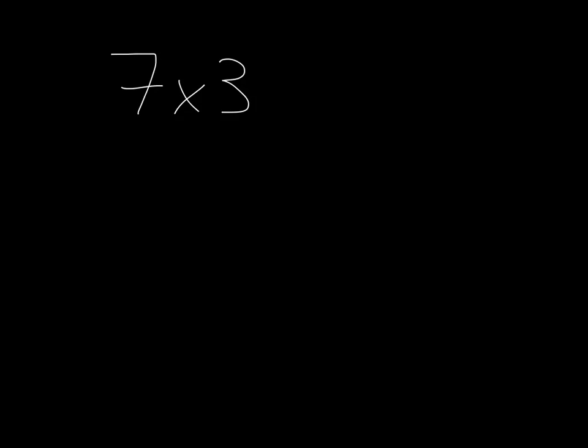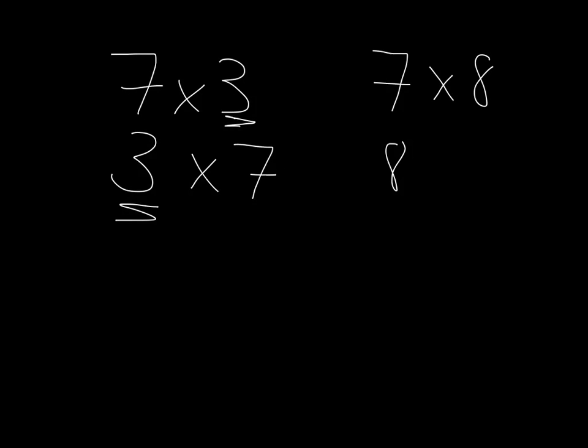Because if we need to do 7 times 3, which is the same as 3 times 7, we can just rely on the 3 times table, which we know really well. And if we want to do 7 times 8, which is the same as 8 times 7, we can rely on the 8 times table, which we should know really well by now.